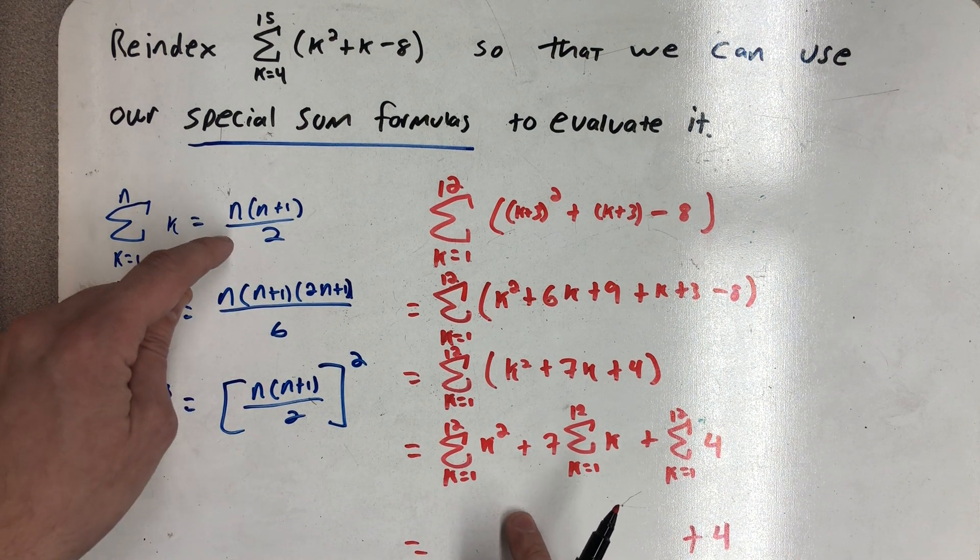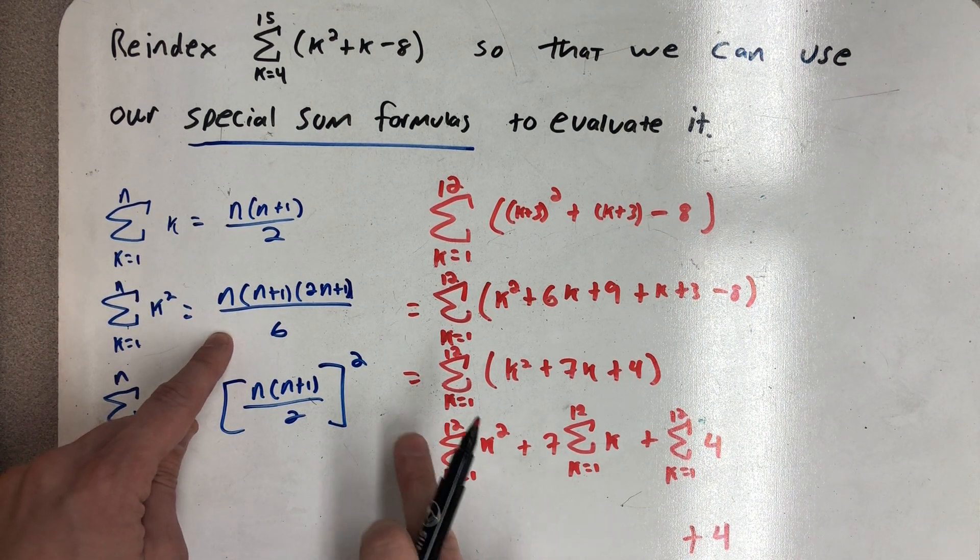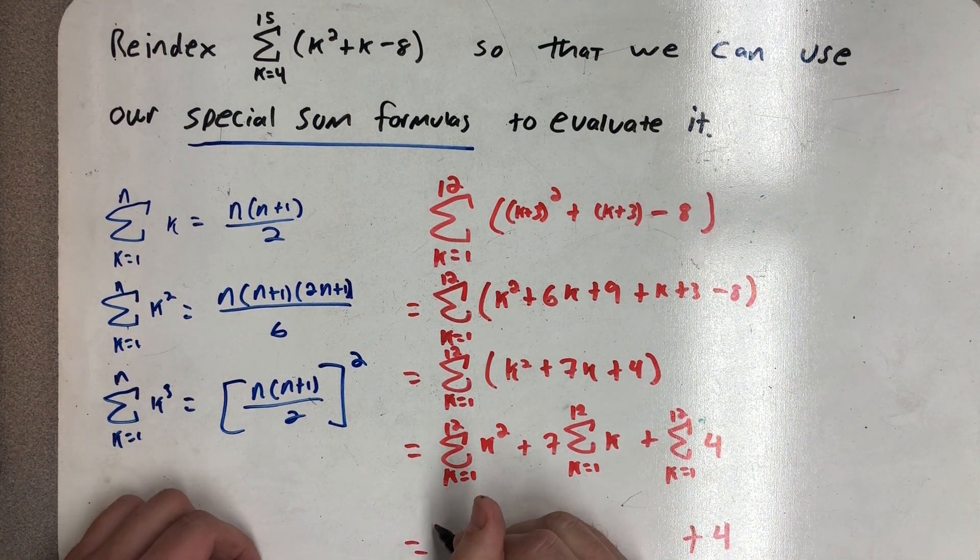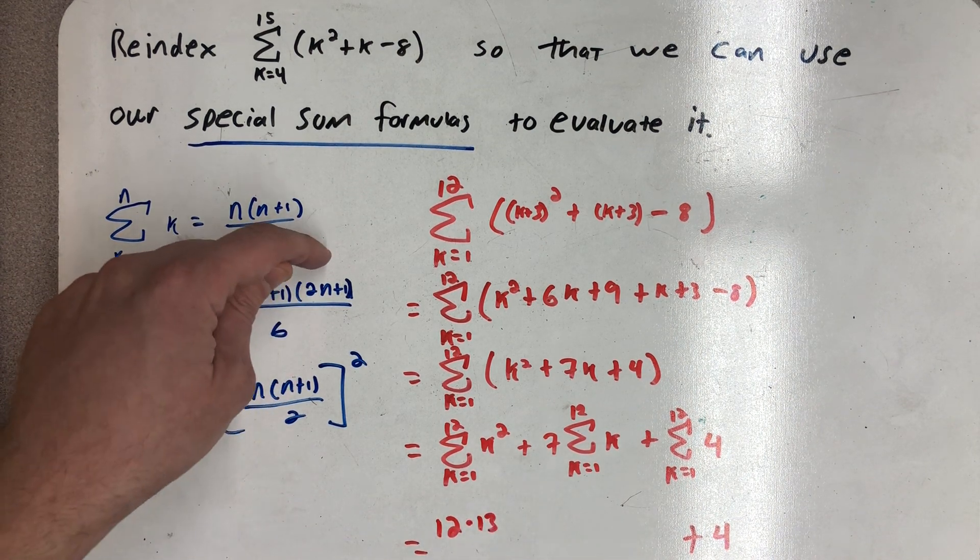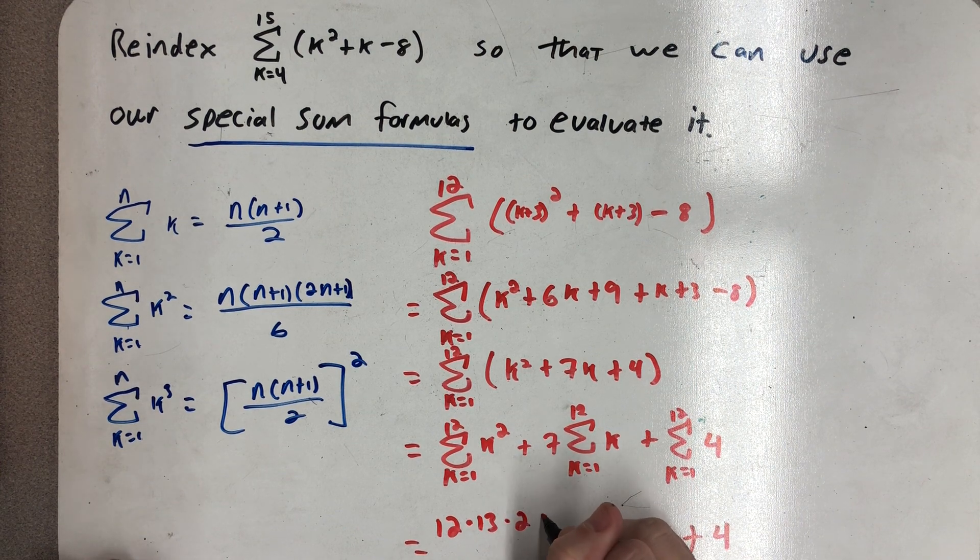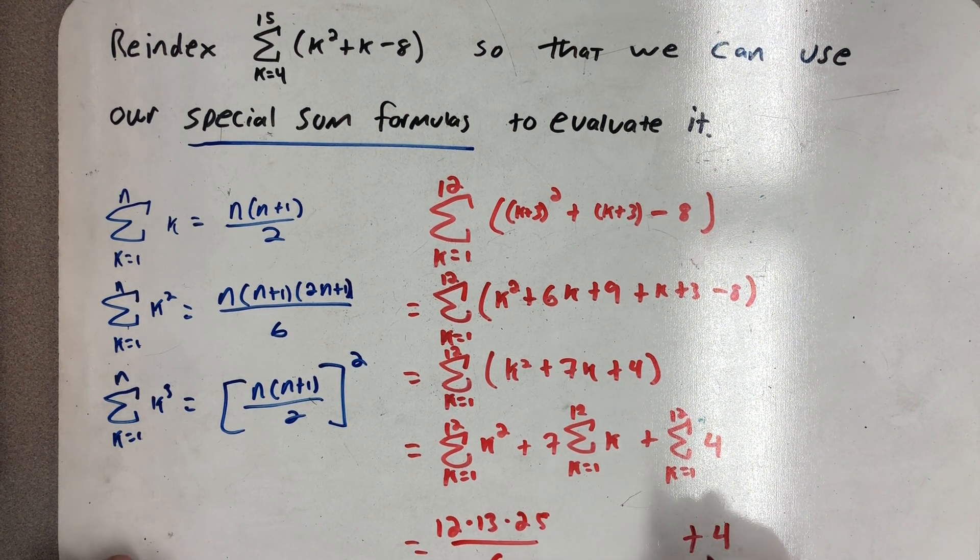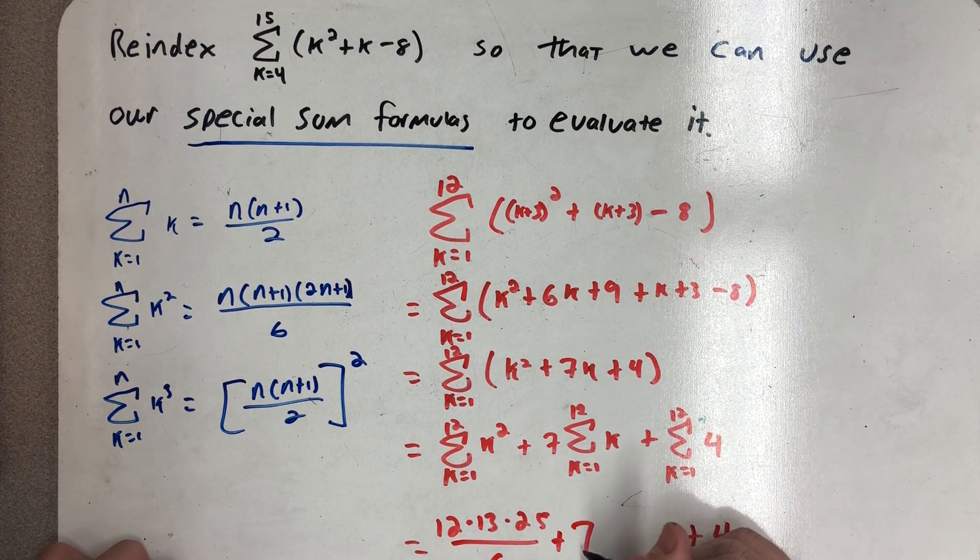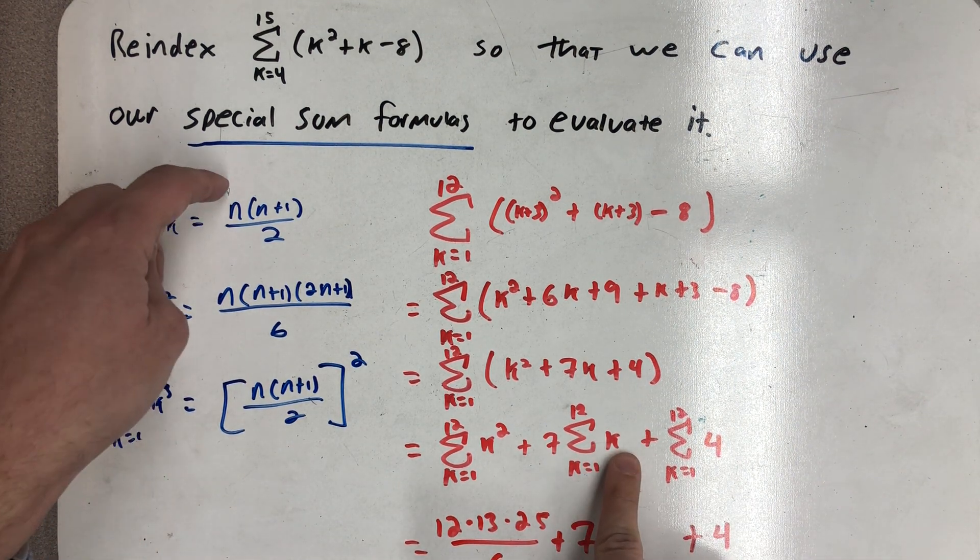This first part I get to use the formula where n is now 12, so I'd have 12 times 13 times 2 times 12 plus 1, so times 25, all over 6.